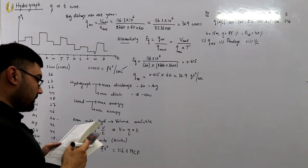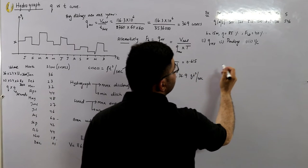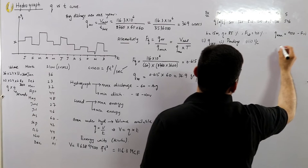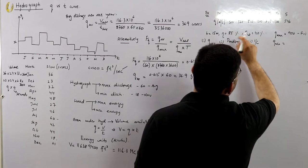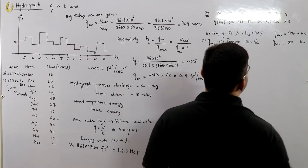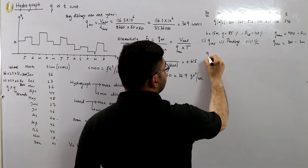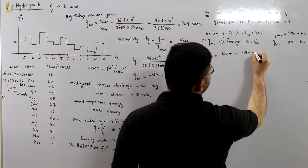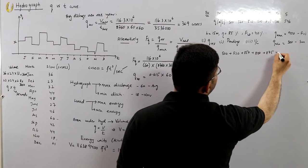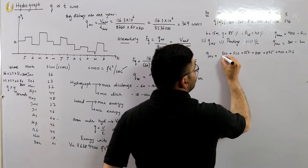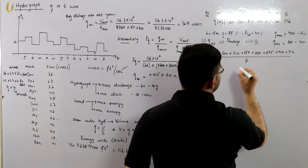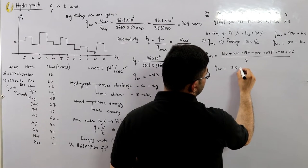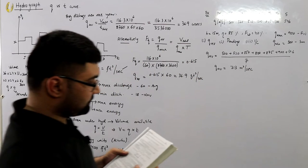From the data, Q_max is 900 on Friday and Q_min is 500 on Sunday. For the average weekly discharge: Q_avg = (500 + 520 + 850 + 800 + 875 + 900 + 546) / 7 = 713 cubic meters per second.